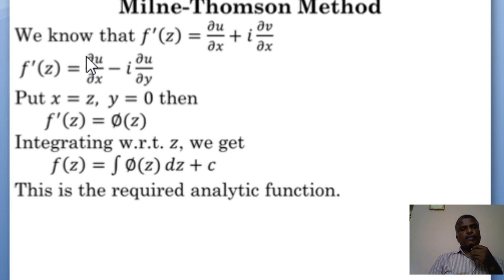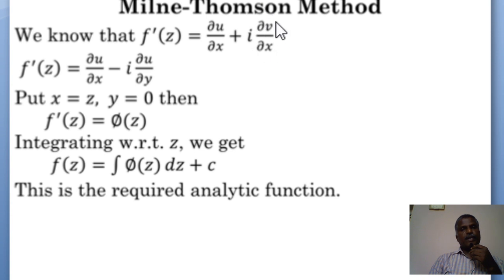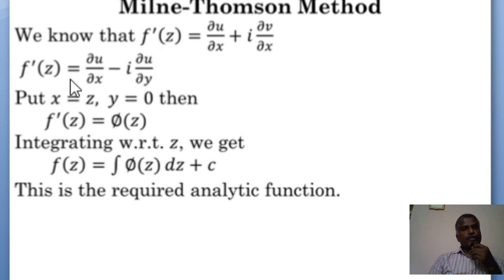Also, because f(z) is analytic, by definition the derivative f'(z) exists, and is equal to ∂u/∂x + i·∂v/∂x. Using the CR equations, we write ∂v/∂x as −∂u/∂y. Then, according to the Milne-Thompson method, we put x = z and y = 0.